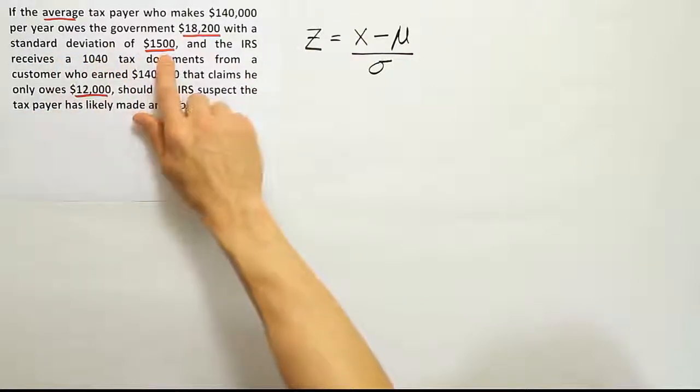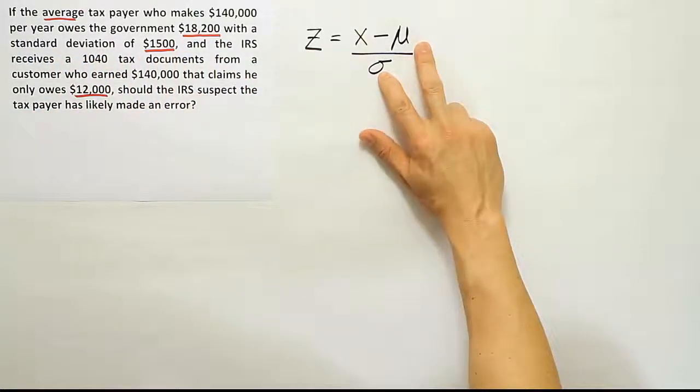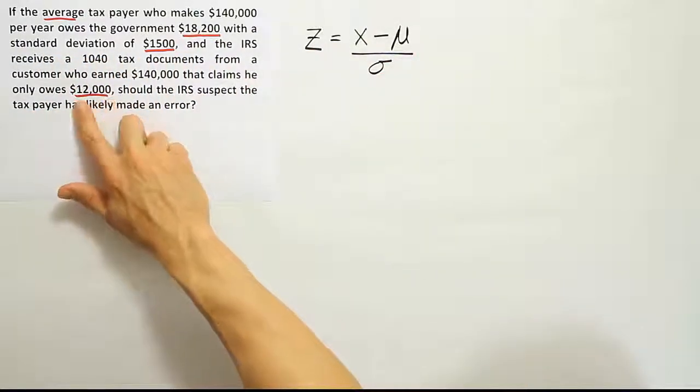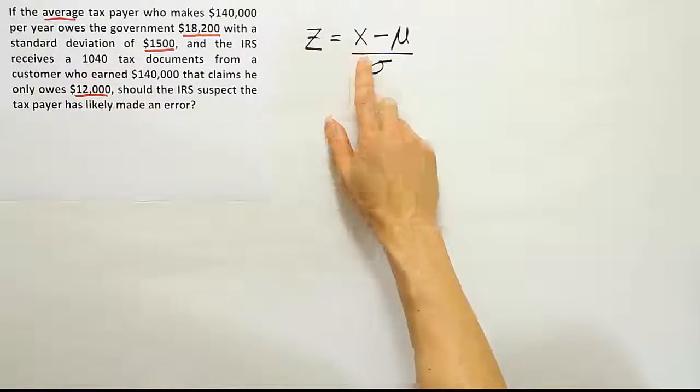Then it has a standard deviation of $1,500, so we have that information. And then the number we want to see if it's unusual or not is $12,000. We're going to put that $12,000 in there. So let's go ahead and do that then.